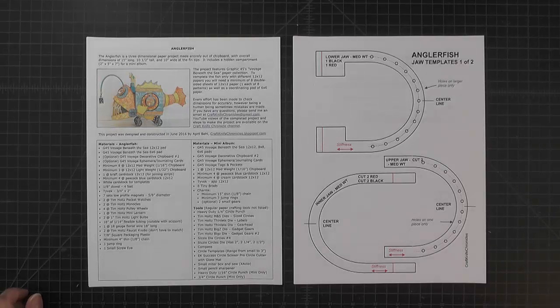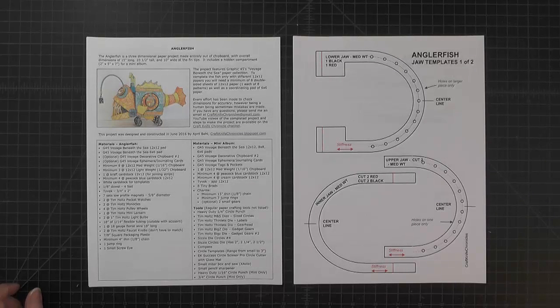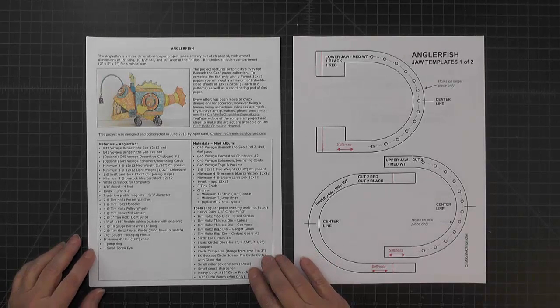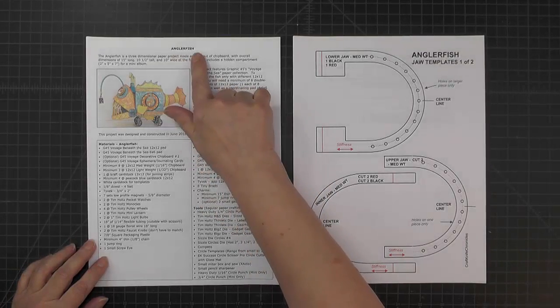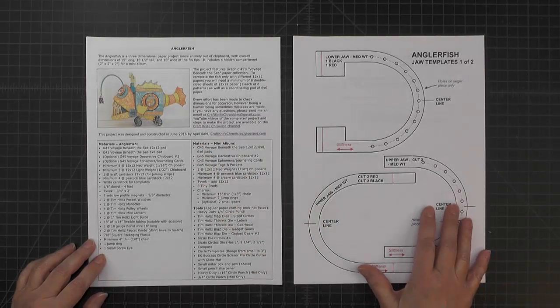To make the anglerfish and the mini album that fits inside of it, you'll want to download a couple of files from Dropbox and the link is in the description below. The first one is called the materials and cutting guide.